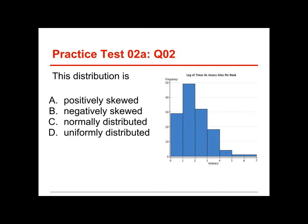Number two, with the same chart: this distribution is positively skewed, negatively skewed, normally distributed, or uniformly distributed? The answer is positively skewed. It's skewed because it's asymmetrical. We have some unusual scores that are further away from the mean than all the others, and those unusual scores are on the high end.